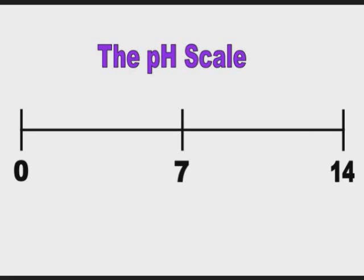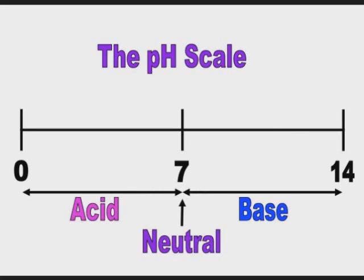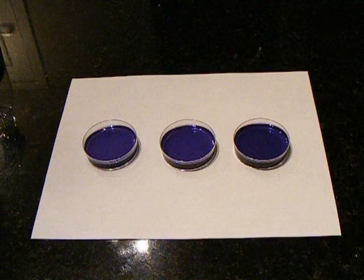The pH scale is used to measure the strength of an acid or base. The pH scale ranges between 0 and 14. A solution with a pH below 7 is acidic, and a solution with a pH greater than 7 is basic.